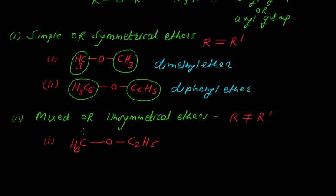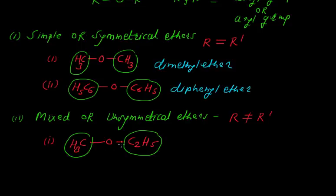In this example, if you see these groups, you will notice that this is the methyl group and this is the ethyl group. It means that both are alkyl groups but these groups are not the same. Such types of ethers are known as unsymmetrical ethers. The name of this compound is ethylmethyl ether.